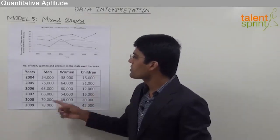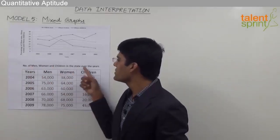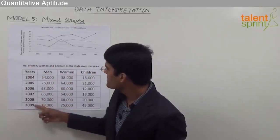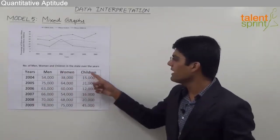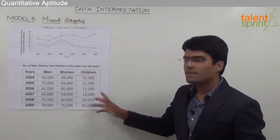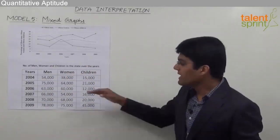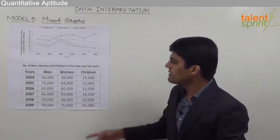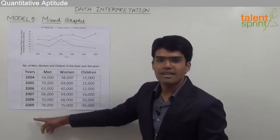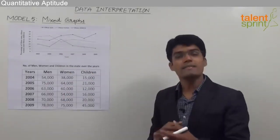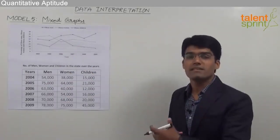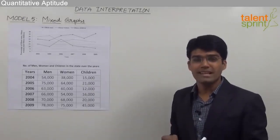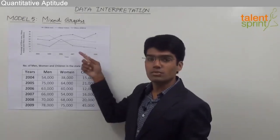The table here shows the number of men, women, and children in the state over the years from 2004 to 2009. So from the table we know the total number of men, women, and children. And from the graph we know the obese men, obese women, and obese children percentages from 2004 to 2009.